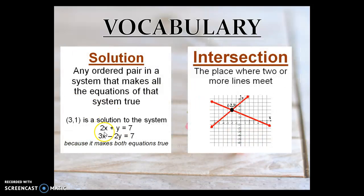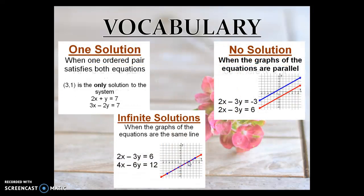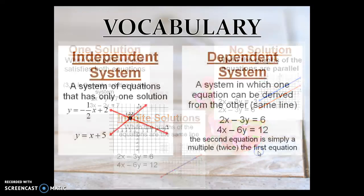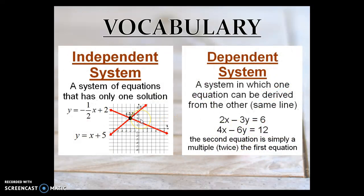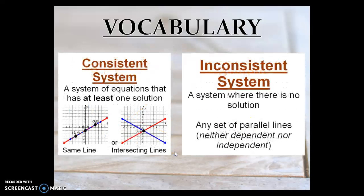The solution is where they cross, or what x and y value make these statements true. The intersection is the solution — intersection is a word you should probably remember. One solution means it crosses once. Infinite solutions means it crosses an infinite amount of times. No solution means it never ever crosses. Independent is a system that has only one solution. Dependent has more than one solution. Consistent crosses at least once. Inconsistent doesn't ever cross.